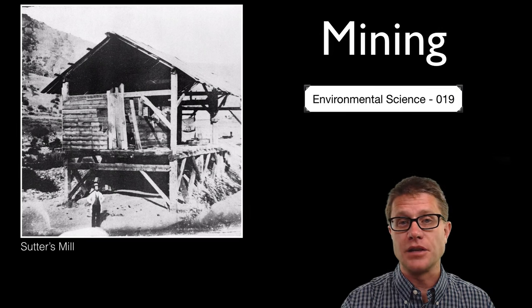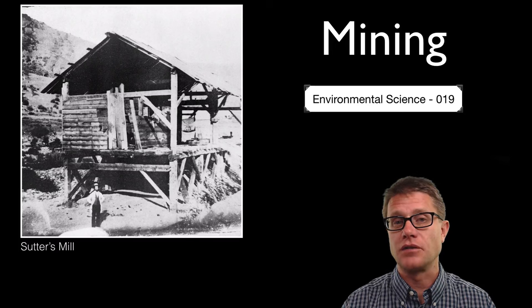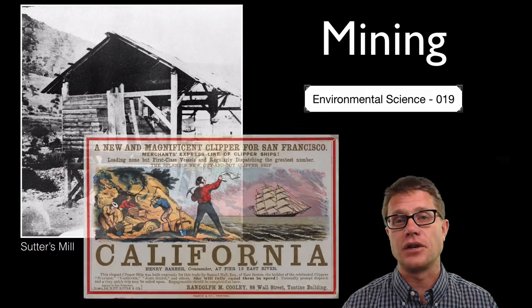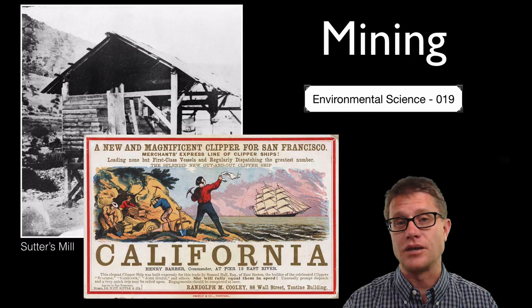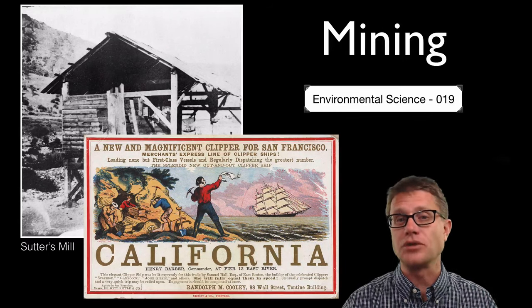In 1848 at Sutter's Mill in California, James Marshall discovered some gold. This kicked off the gold rush. Over 300,000 people came by land and by sea to California to strike it rich. A few did. Most of them did not.